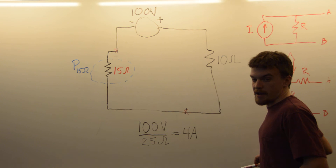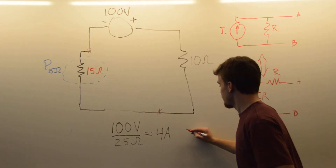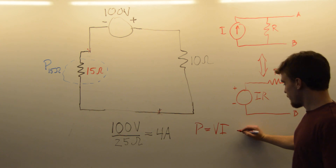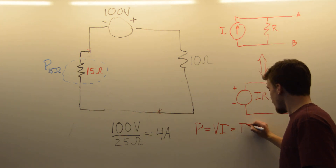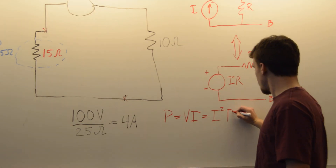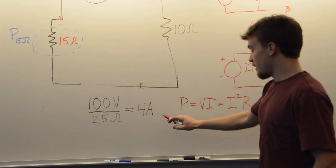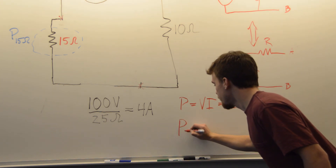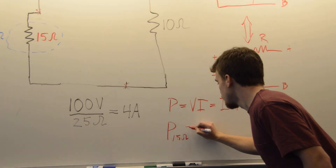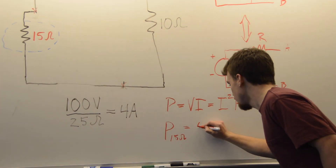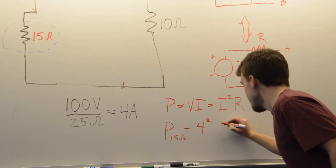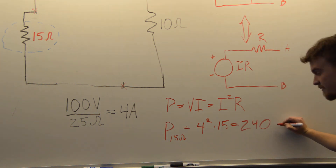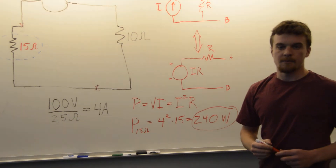Now, we know that power in a resistor is equal to voltage times current, which is also equal to current squared times the resistor value. Since we know the resistor value and we know the current going through it, power in the 15-ohm resistor is equal to 4 amps squared times 15, which is equal to 240 watts. And that's your answer.